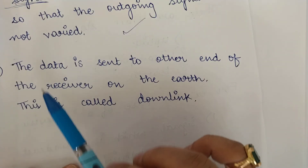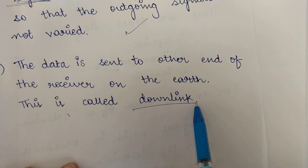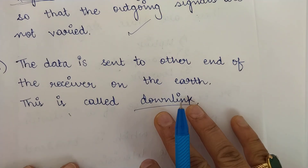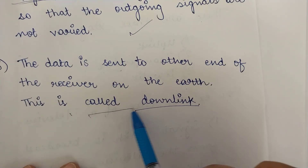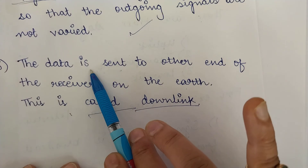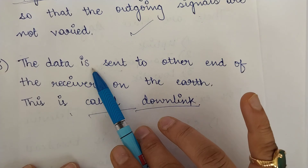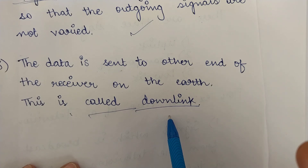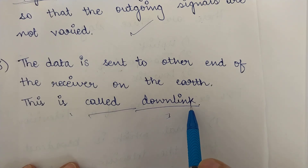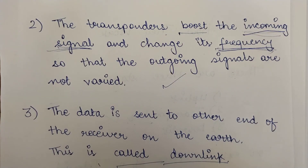The third stage is the downlink, where data is sent from the satellite to the receivers at the other end of the Earth — for example, receivers connected to our television sets. When this data is sent from the communication satellite to other ground stations on Earth, this is called the downlink. This is all about communication satellites. In our next video, we are going to study the different types of satellite communication.